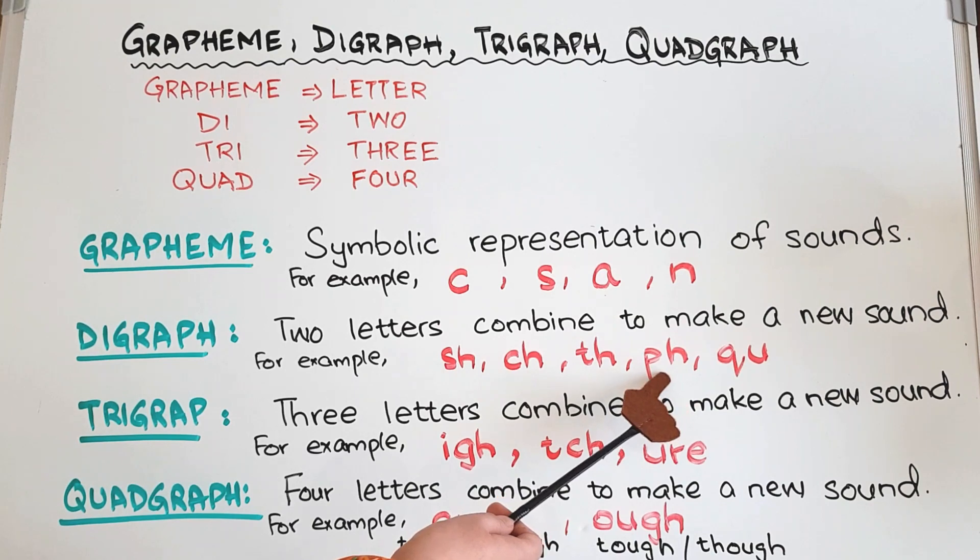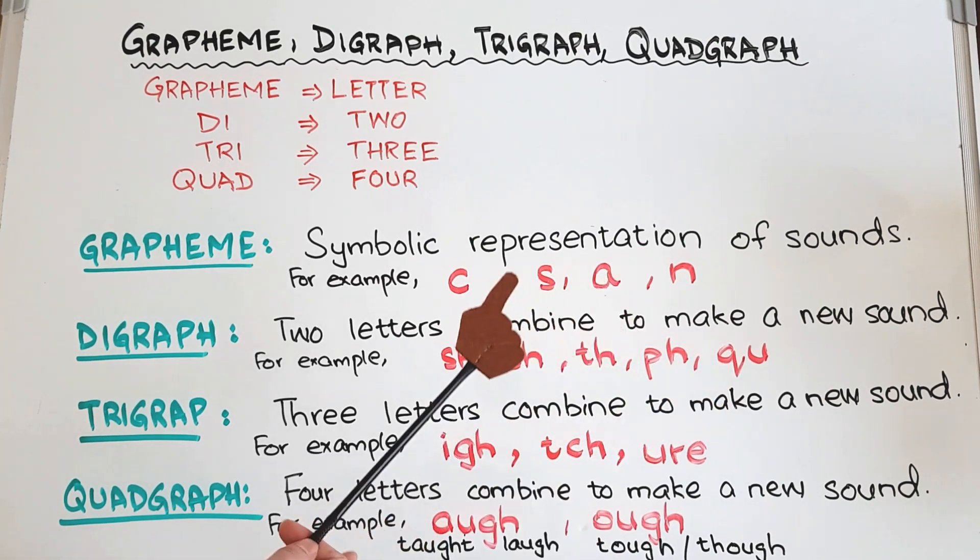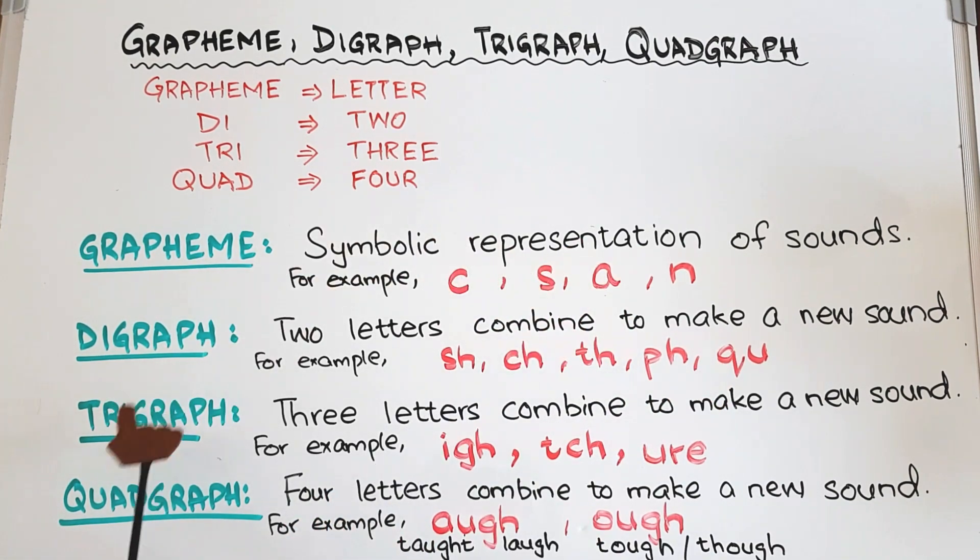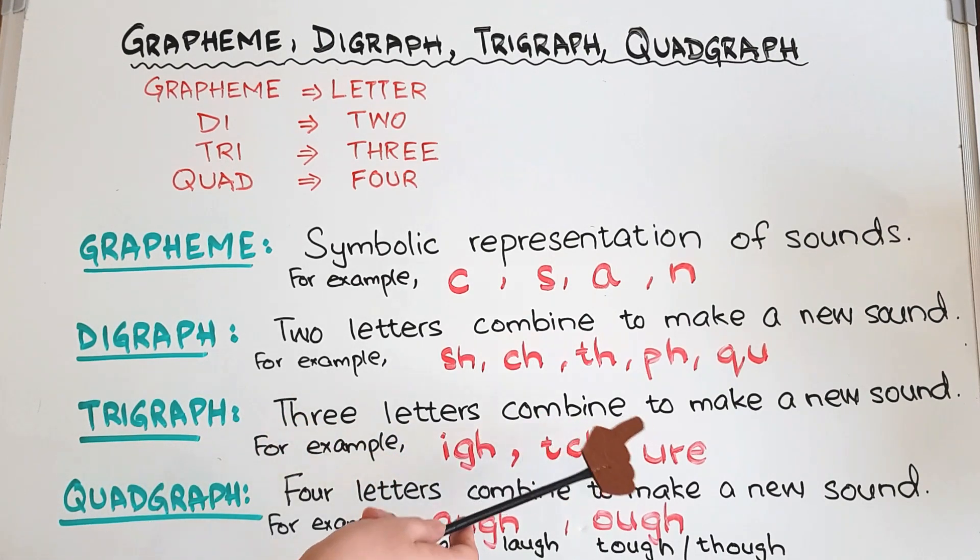Now trigraph. Trigraphs are simply three letters combined to make a new sound. For example, IGH combine and say 'I' sound, TCH give 'ch' sound, URE give 'your' sound like in pure or cure.